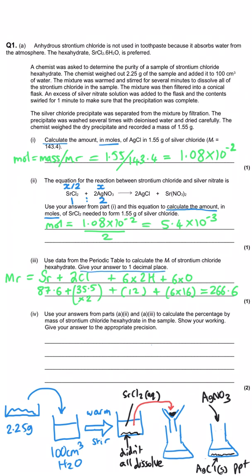And then they ask us to use our answers from part A2 and 3 to calculate the percentage by mass of strontium chloride hexahydrate in the sample and show our workings. So whenever you're working out a percentage by mass, it's good to visualize the whole, and I've represented that with the pie chart. So the strontium hexahydrate is just one portion of that. We have 2.25 grams of sample. That's our whole sample. Some of that is strontium chloride hexahydrate, but not all. So what we have to do is work out what mass the strontium chloride hexahydrate has by using its moles and multiplying it by the Mr that we've just calculated.